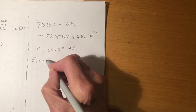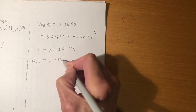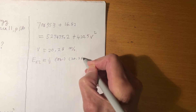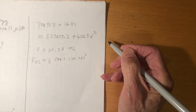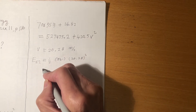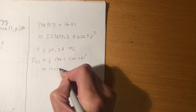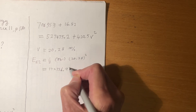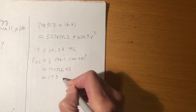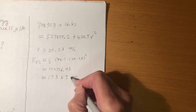The kinetic energy at position 2 is one-half times 841 times V squared — that is one-half times 841 times 22.8 squared. My student worked it out to 172,736.93, which equals 173 kJ. This is the answer given by the book.